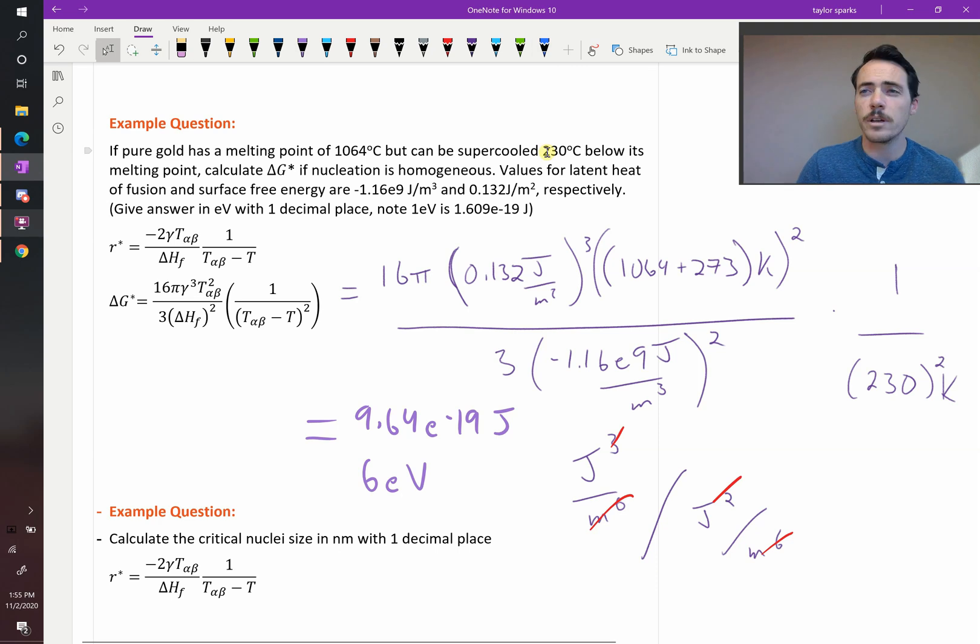That's a pretty big activation energy, and that's when you're at 230 degrees below the melting point. So it's actually fairly common for some of these metals and materials to supercool way below what the phase diagram suggests. The phase diagram suggested that it would happen exactly at 1064, but in reality, you don't see solidification from homogeneous nucleation until quite a bit below that.